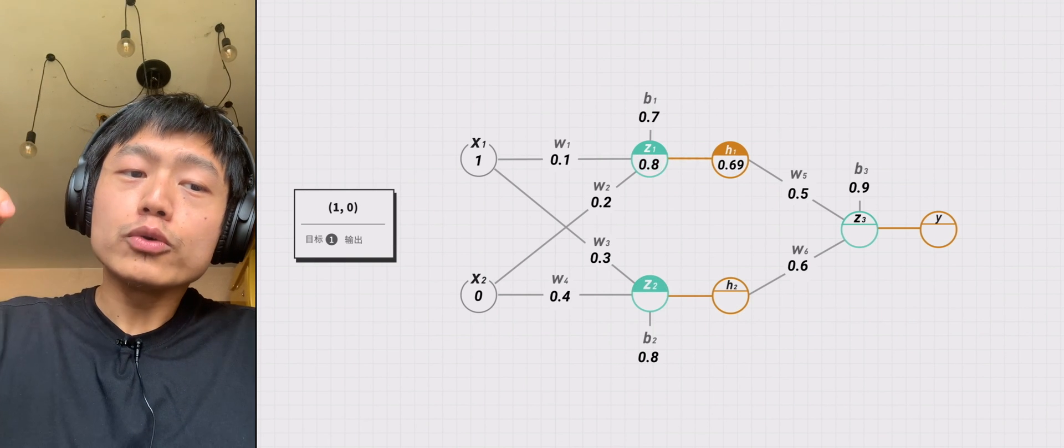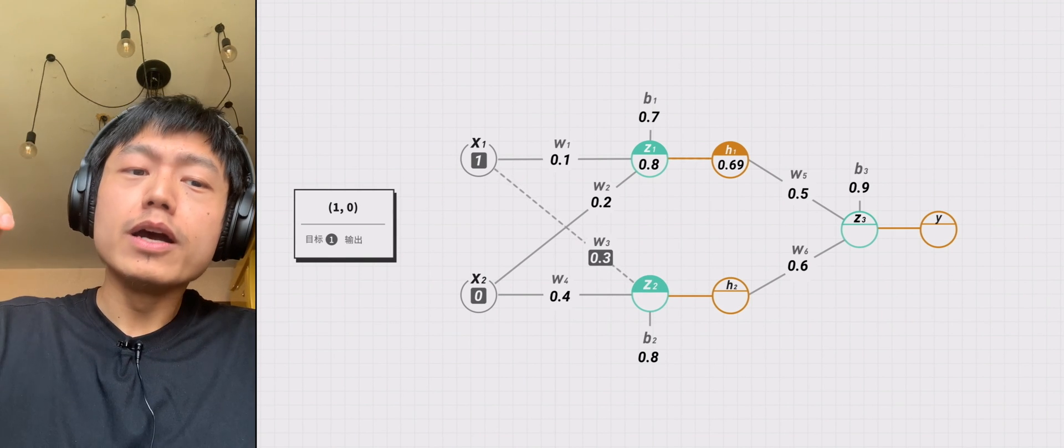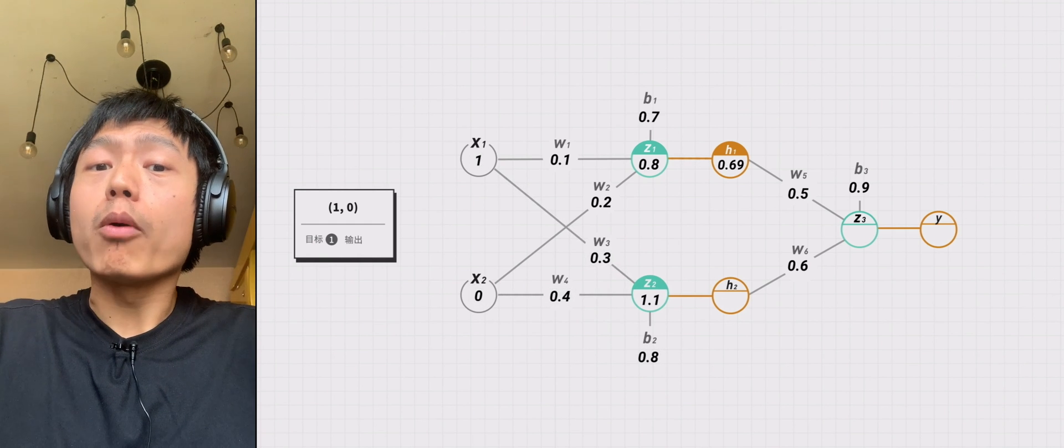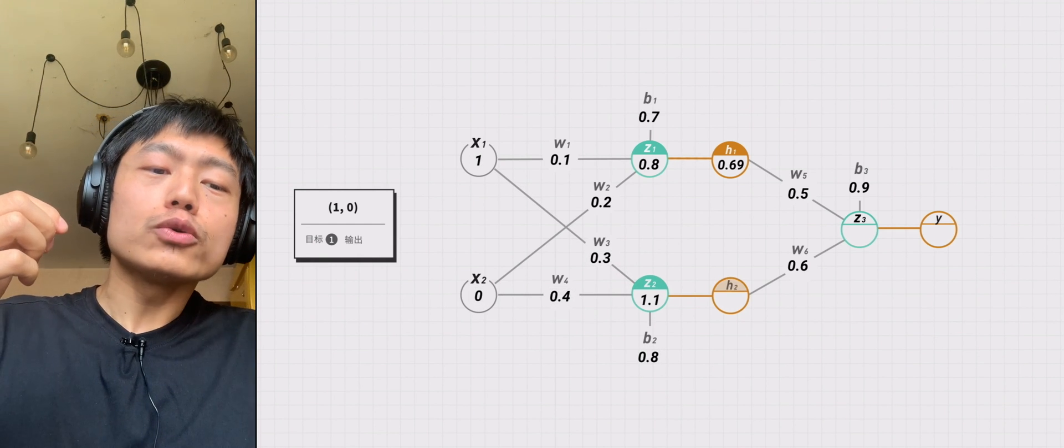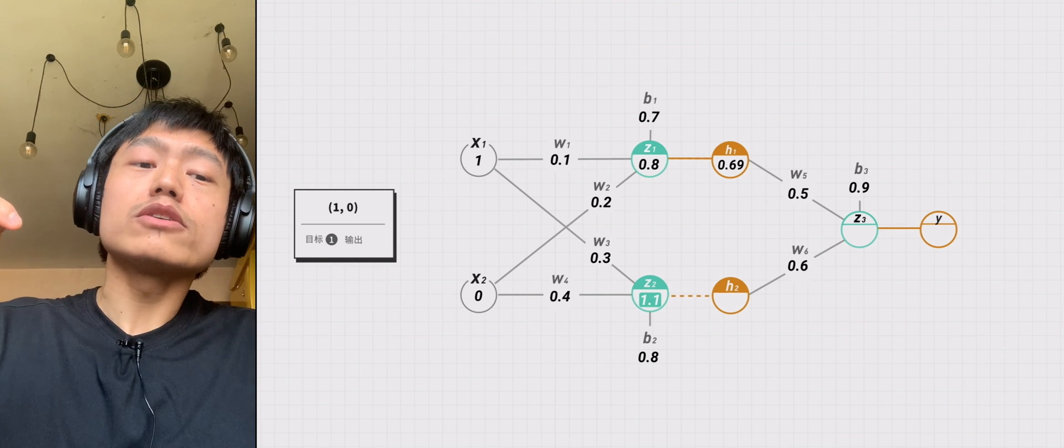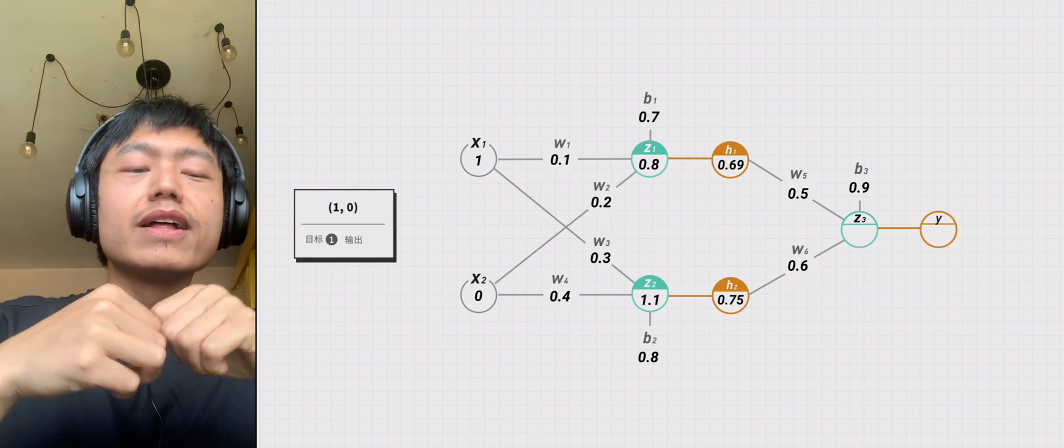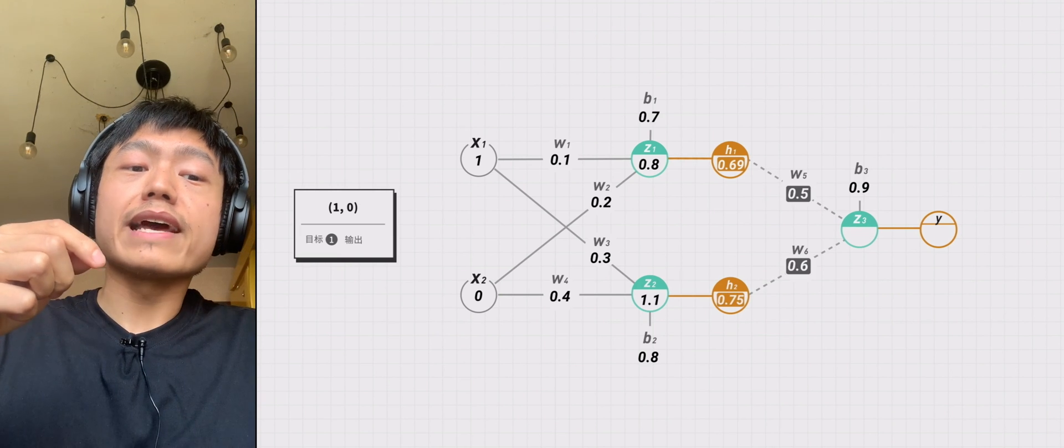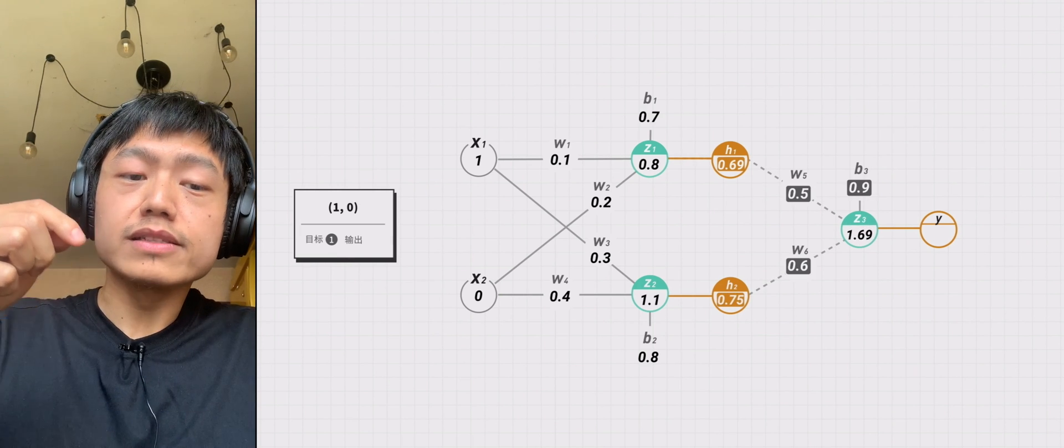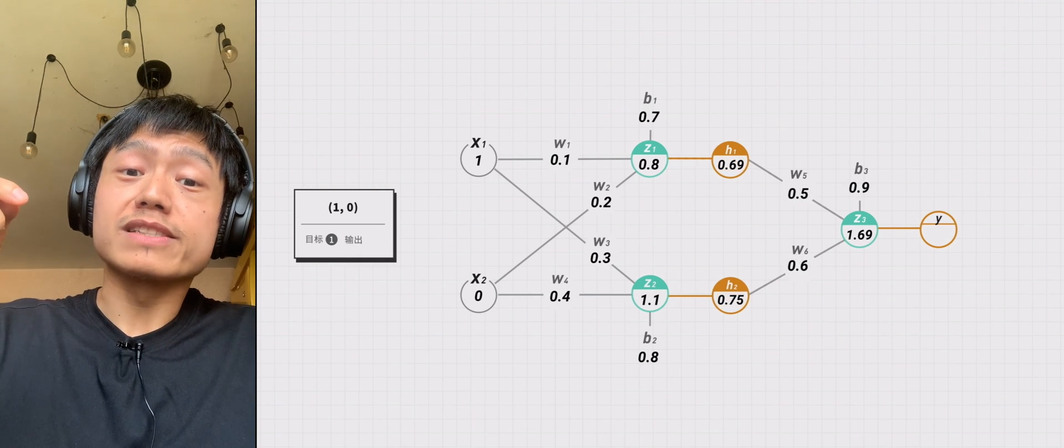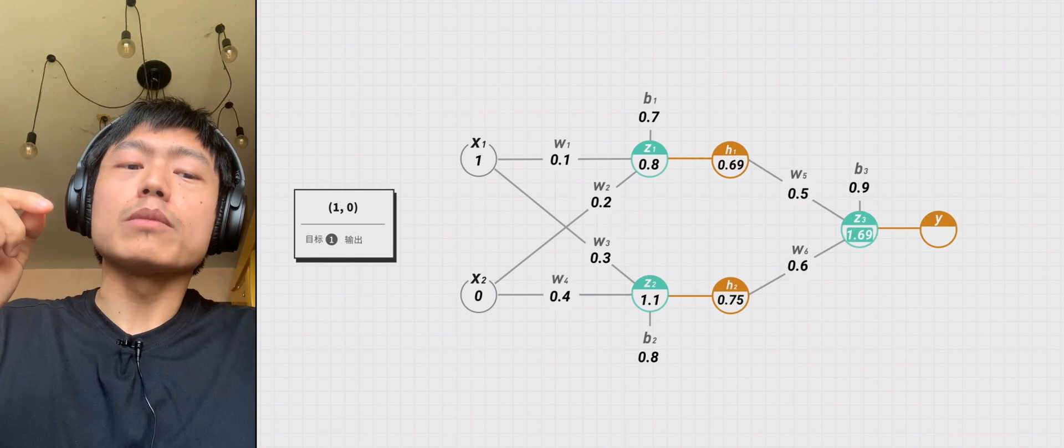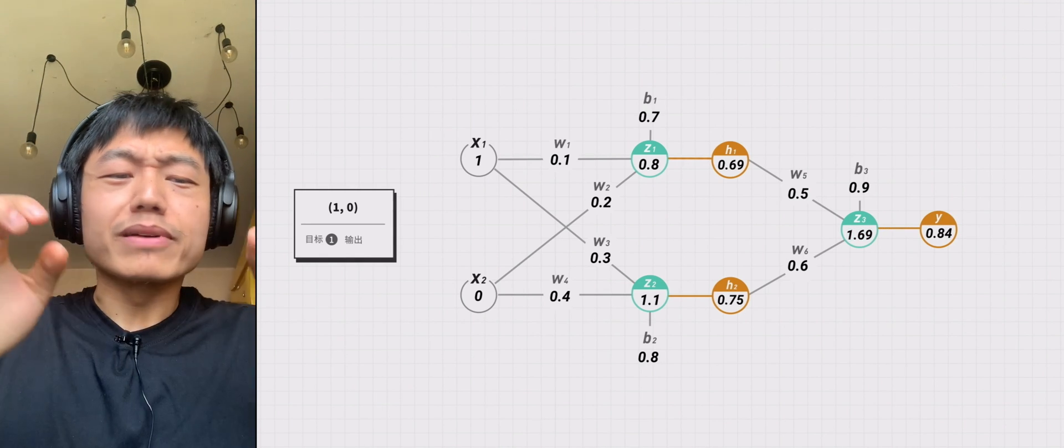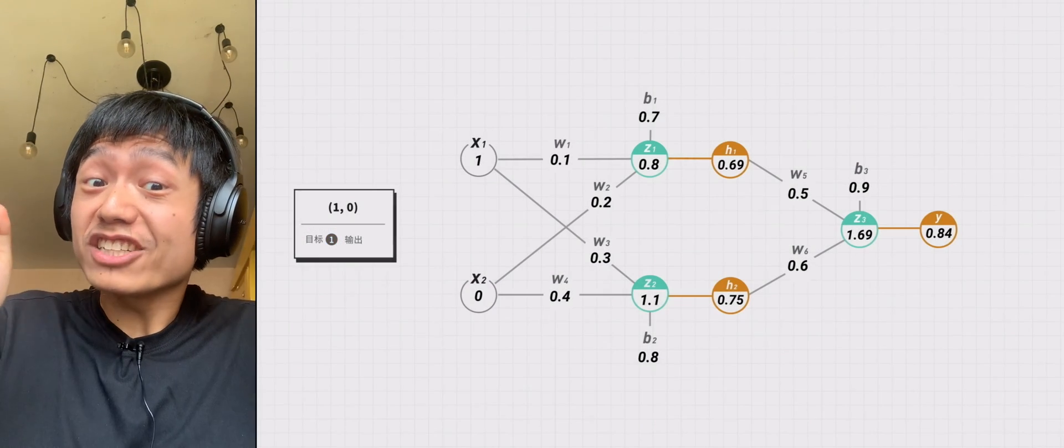z2 equals x1 times w3 plus x2 times w4 plus b2 equals 1.1. h2 equals sigma z2 equals 0.75. z3 equals h1 times w5 plus h2 times w6 plus b3 equals 1.69. y equals sigma z3 equals 0.84. There is some gap between it and the goal of 1.